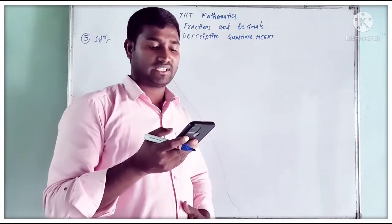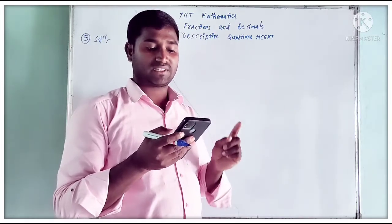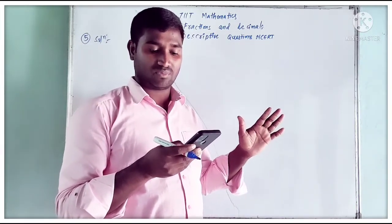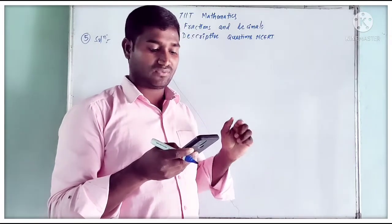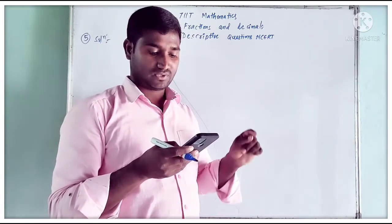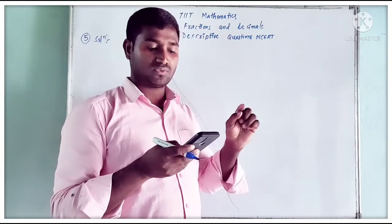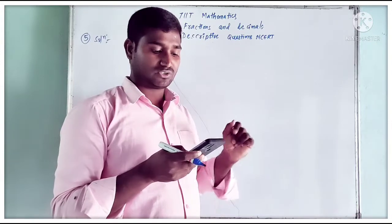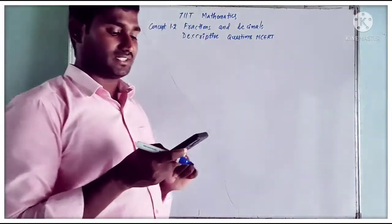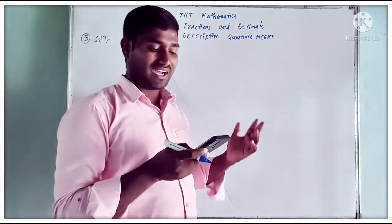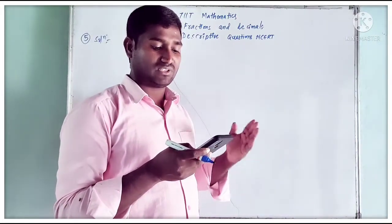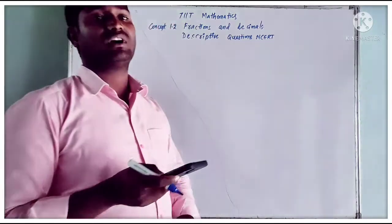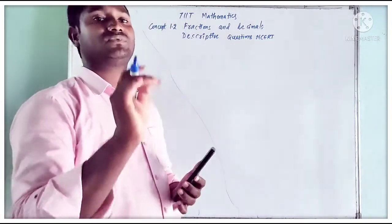Now I am going to discuss the fifth question. Vidya and Pratap went for a picnic. Their mother gave them a water bottle that contained 5 liters of water. Vidya consumed 2 fifths of the water and Pratap consumed the remaining. First question: how much water did Vidya drink? The total quantity of the water bottle is 5 liters.